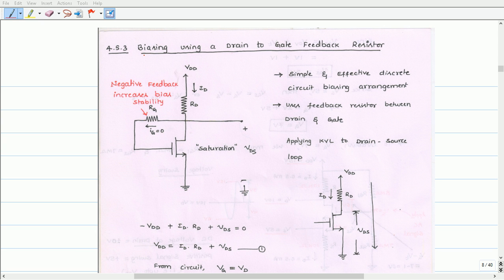In this video let us discuss another biasing scheme known as biasing using a drain to gate feedback resistor. This is a simple and effective discrete circuit biasing arrangement that is shown in this figure.